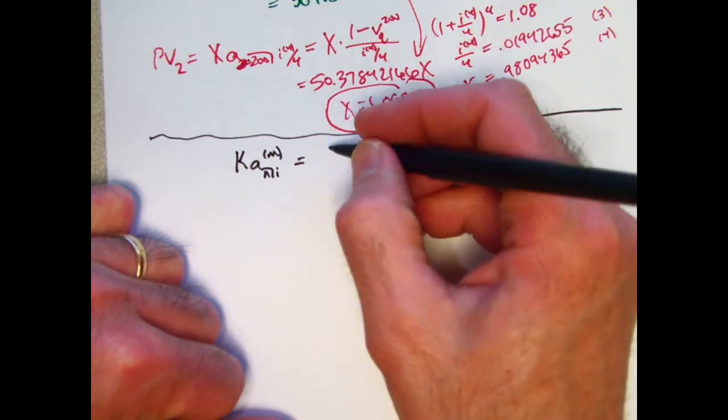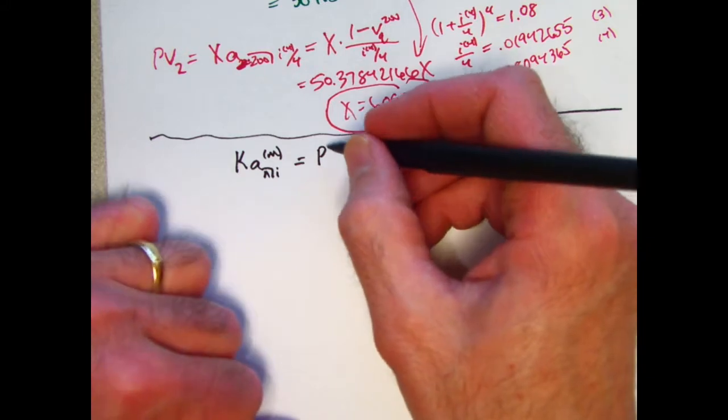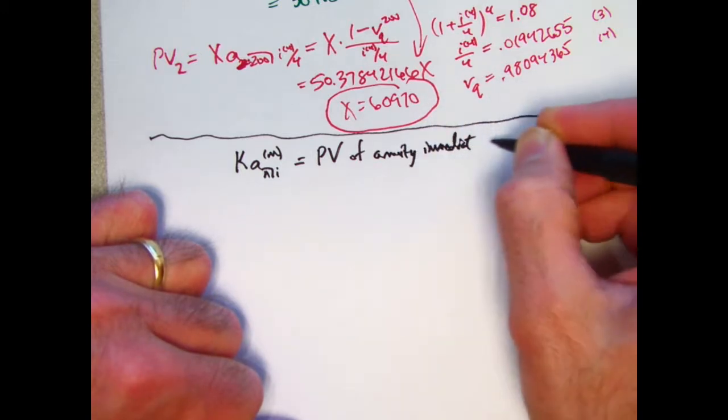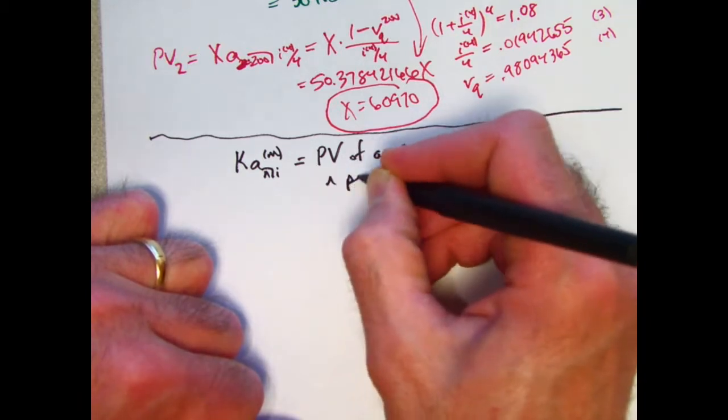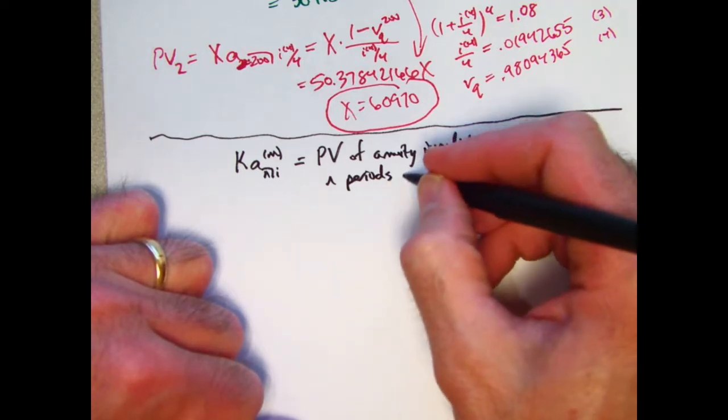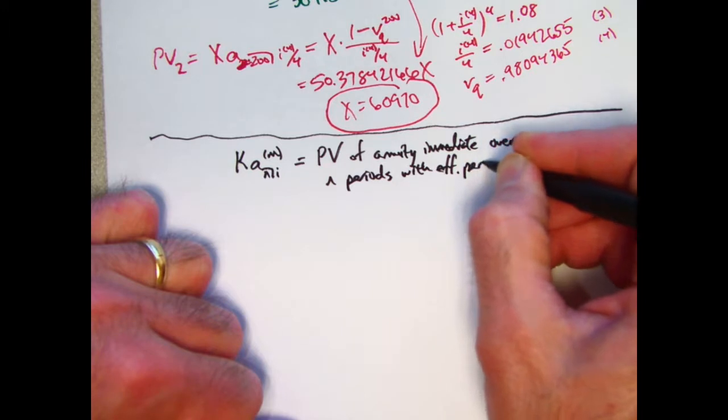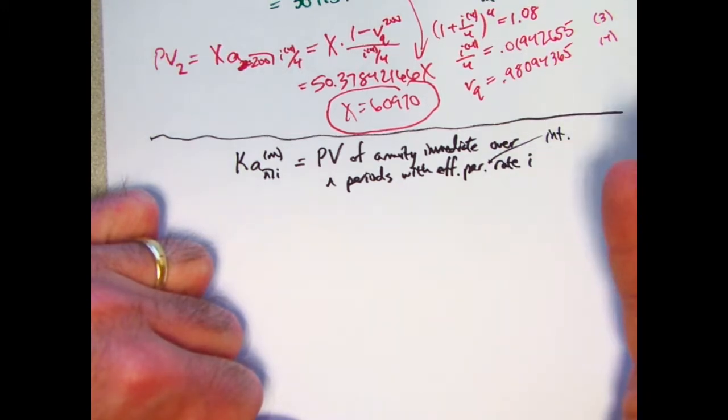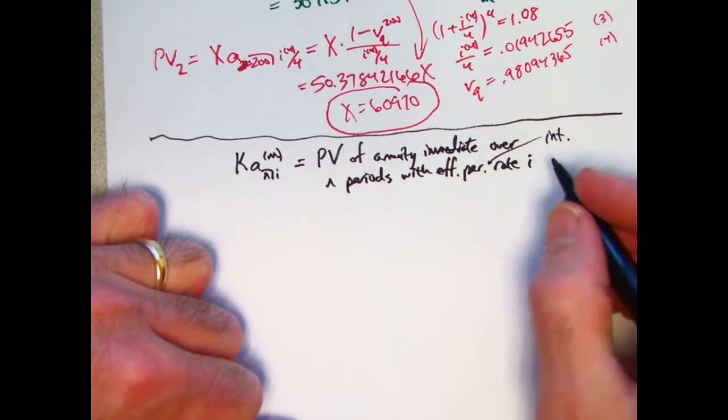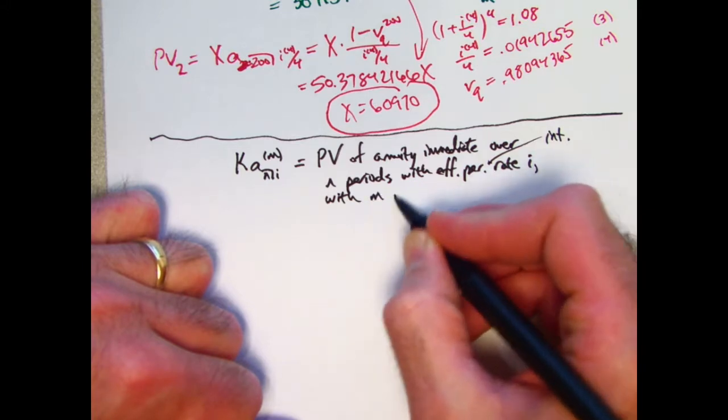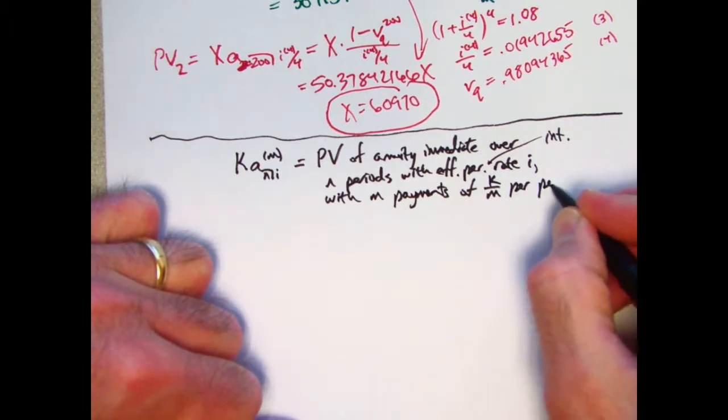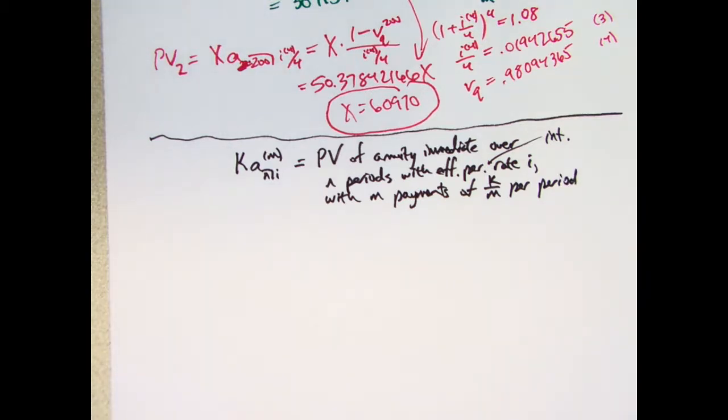You can describe this in the most general way as the present value of an annuity immediate over N periods. If the periods are years, this would be N years. With effective periodic rate, I, interest rate, I should call this interest rate. If it were, if the period were years, this would be an annual interest rate, an effective annual rate with N payments of K divided by M per period. Again, if the period was years, this would be per year.